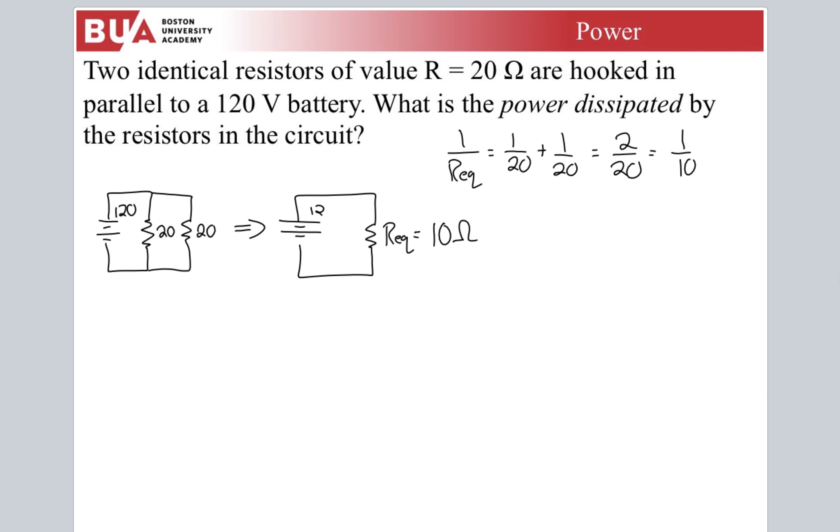Now we figure out, so I, V over R, 120 over 10, 12 amps. Significantly more current when we hook them up in parallel. And power, 12 amps times 120 volts, 1440 watts. Way more power. Way more power here than here. I should also note that we could have done right from here. We have V and R. We could have done V squared over R. That would have given us 1440 as well.